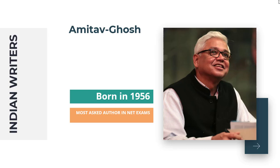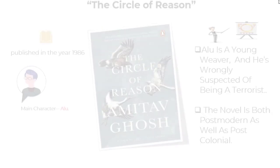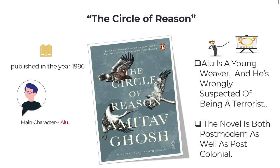The first work I would like to speak about is The Circle of Reason, published in 1986. It is about Alu, who is a young weaver and is wrongly suspected of being a terrorist. He leaves India and settles in Africa in order to safeguard himself. The novel is both postmodern as well as postcolonial, as it talks about the postcolonial life of India and Africa. The main character is Alu.